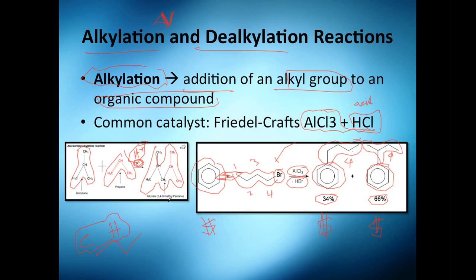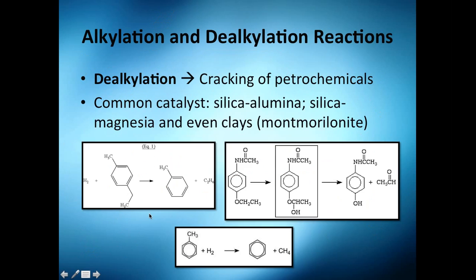That alkylation reaction produces the alkylate 2,4-dimethylpentane. Now, cracking is essentially the opposite — breaking large alkyl molecules down into smaller molecules. This is very common in petrochemicals, where long-chain compounds need to be broken down to two or three carbons depending on market demand.